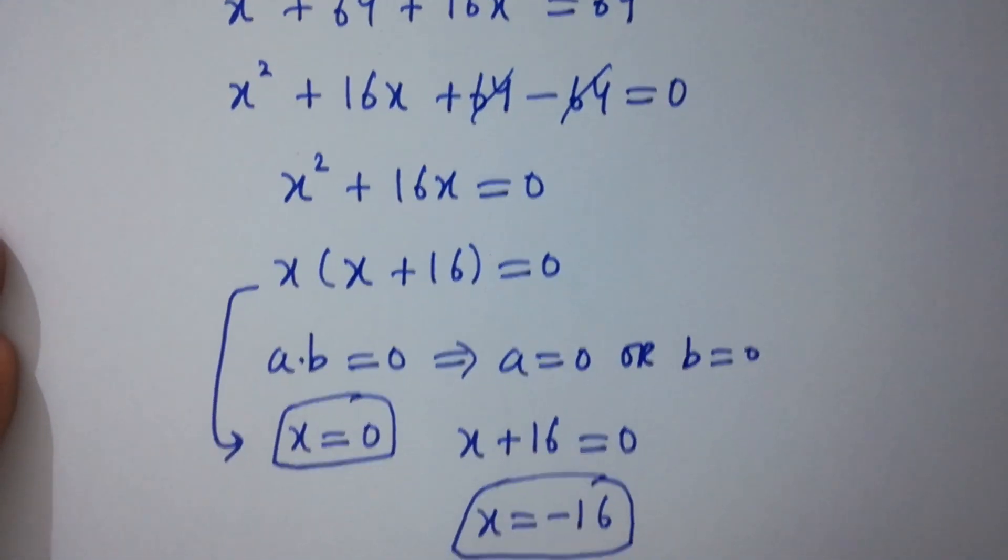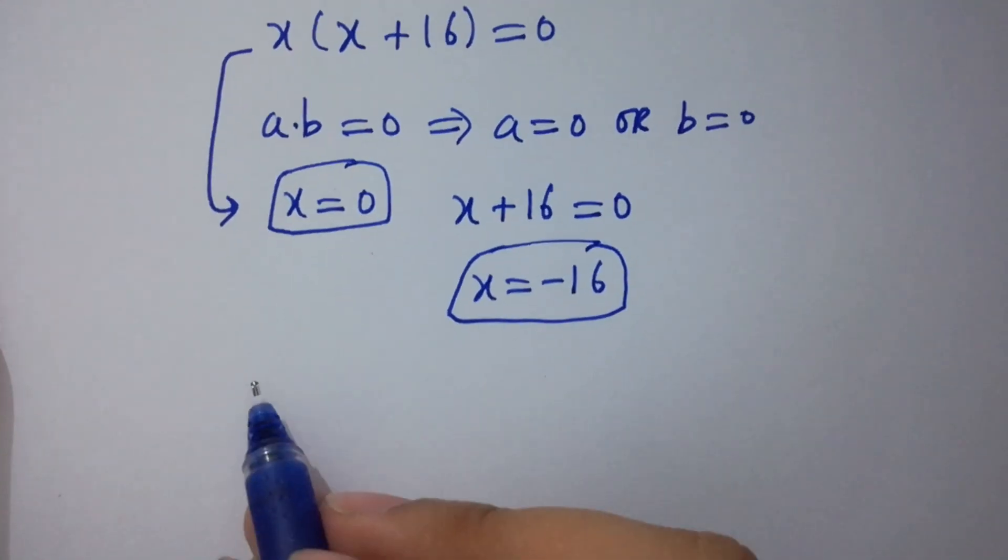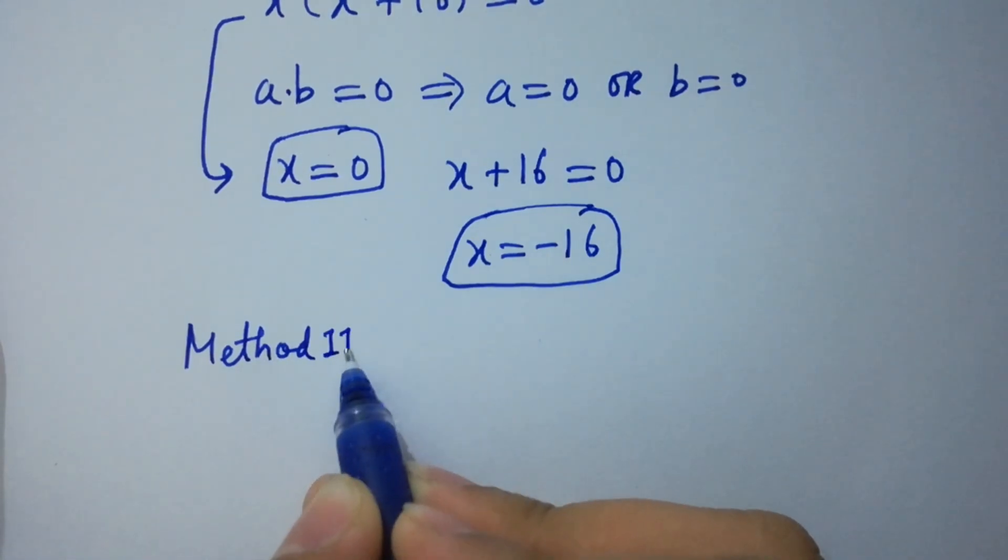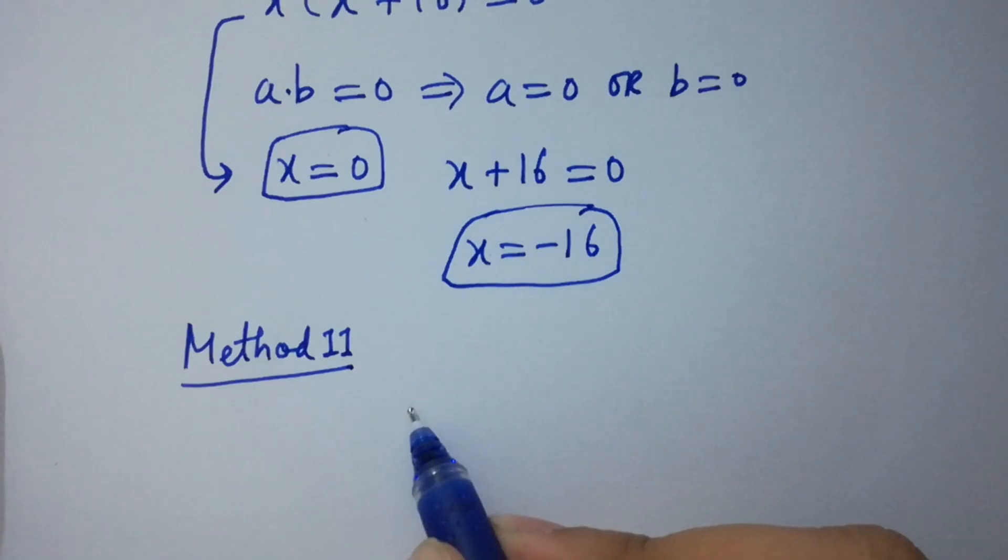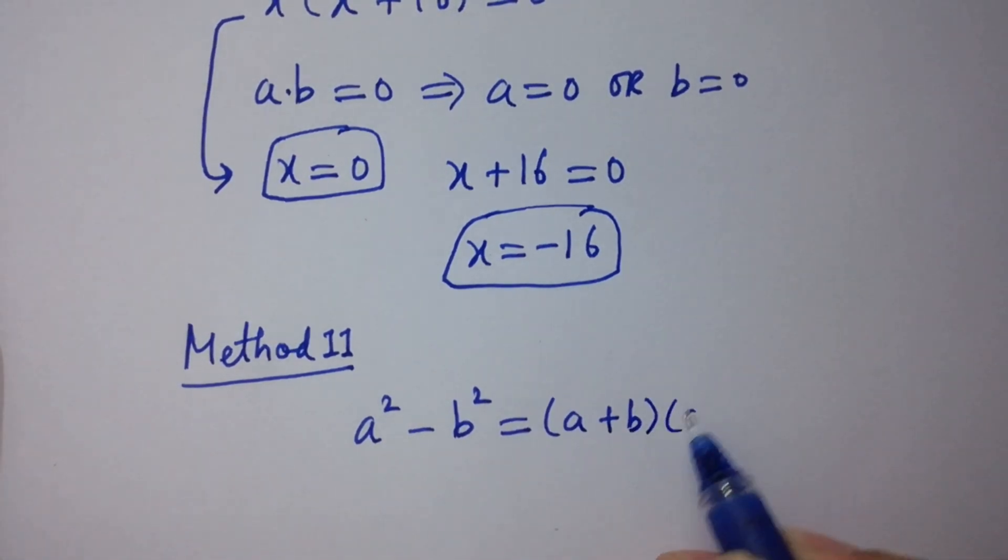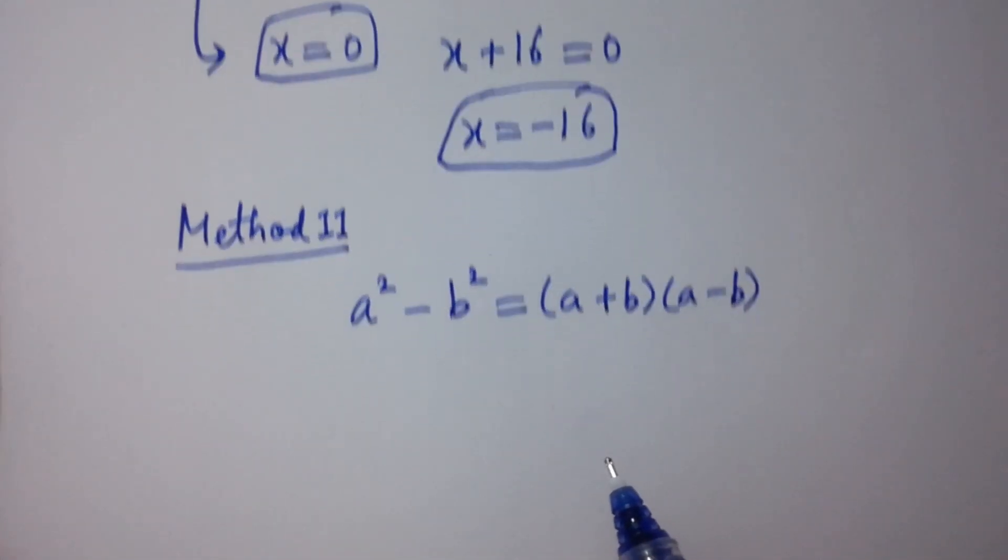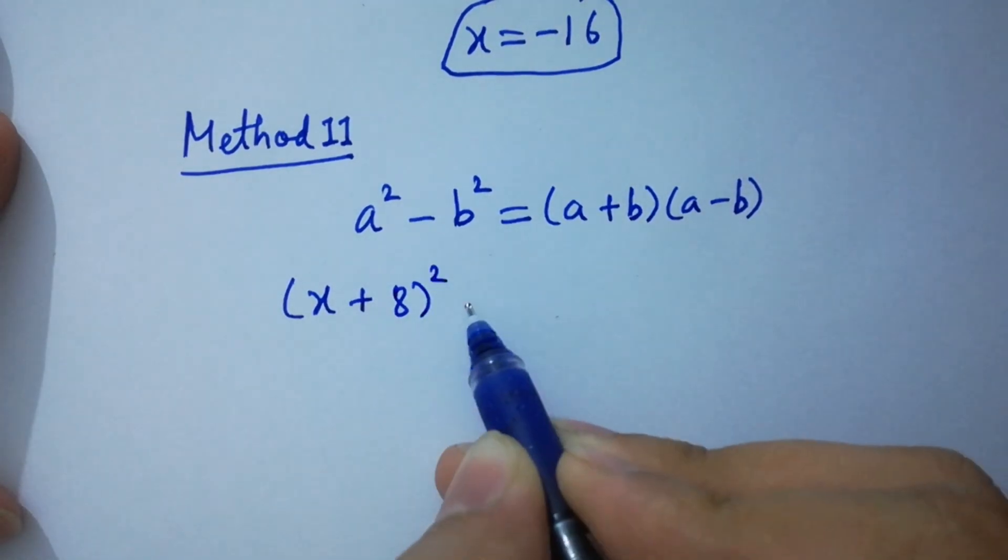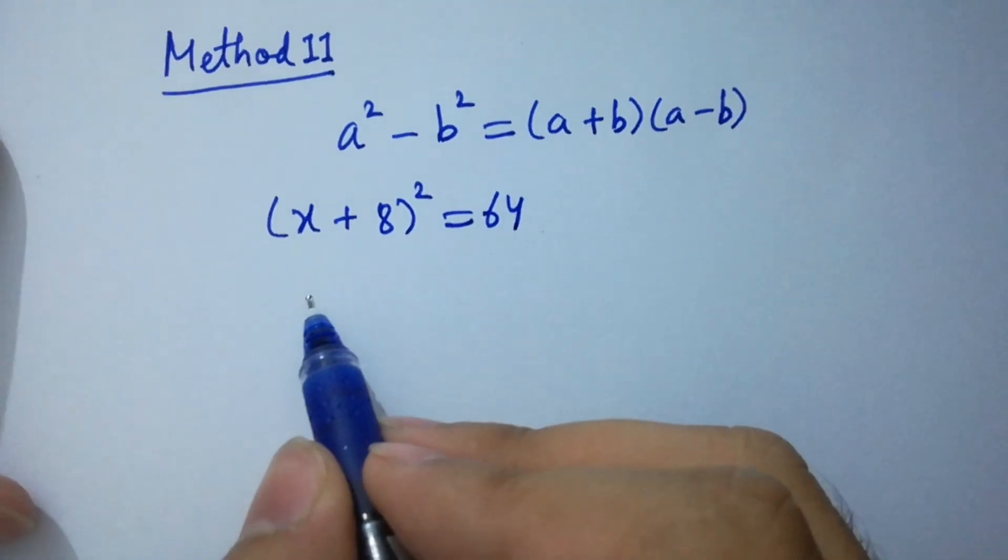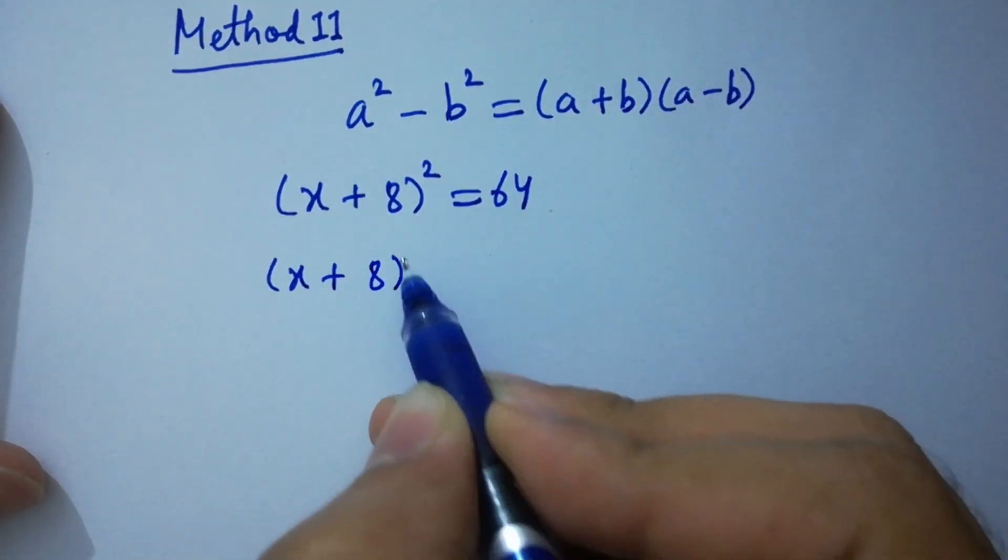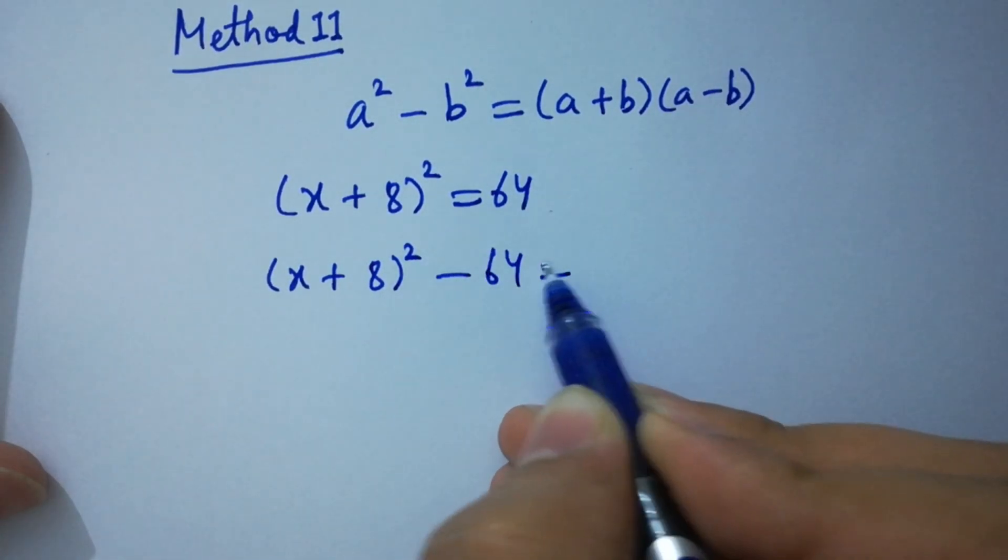Now I am going to solve this question by method 2. Method 2 is a² - b² = (a + b)(a - b). We have (x + 8)² = 64, which can be written as (x + 8)² - 64 = 0.